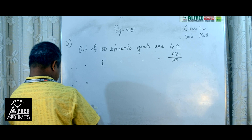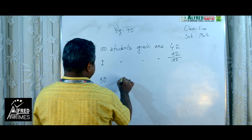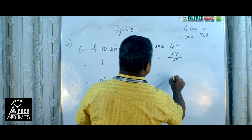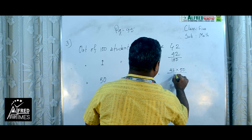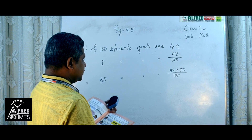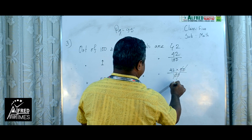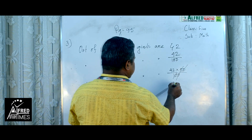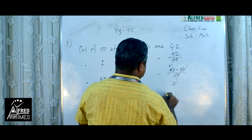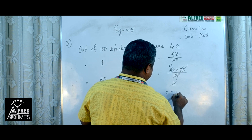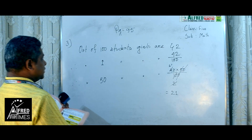So out of 50 — because we have 50 total students — out of 50, girls are 42 into 50 divided by 100. You can calculate: cancel the zeros, 50 by 100 simplifies, divide by 2 to get 42 into 0.5, giving us 21. So we get 21 girls.